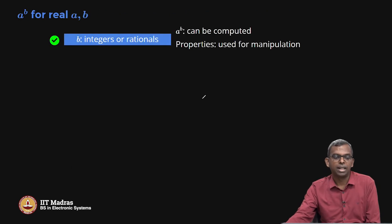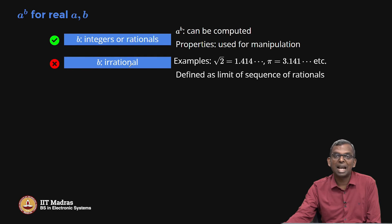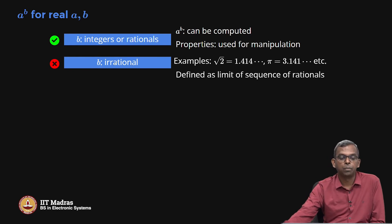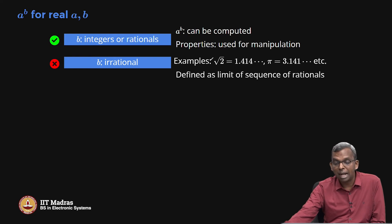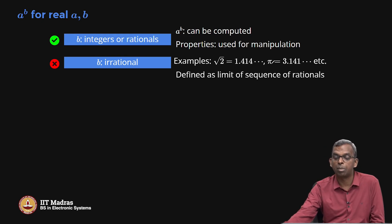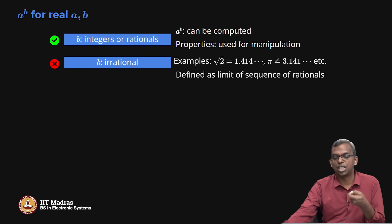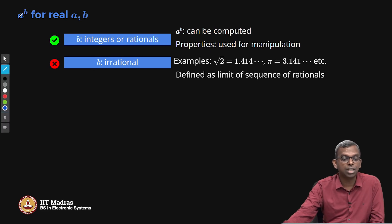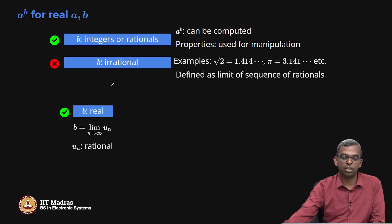The third case is when b is irrational — for example, root 2 or pi. These are numbers that do not have a rational form, but they can be defined as the limit of a sequence of rationals. We have a root-2 sequence and the Madhava–Leibniz sequence for pi. Using those sequences, we can define irrational numbers as limits of rational sequences. When the power is irrational, you again resort to limits.